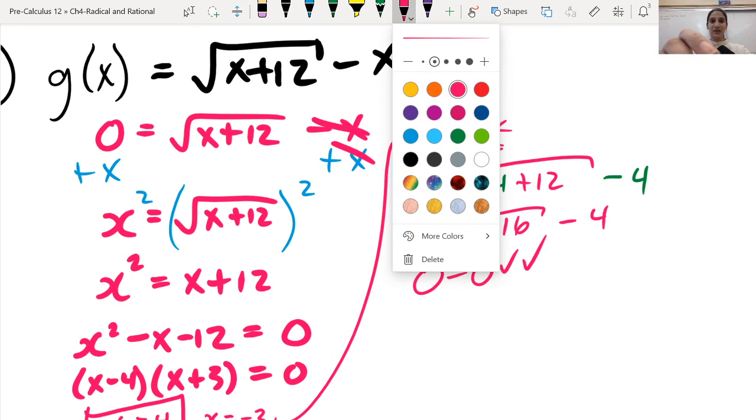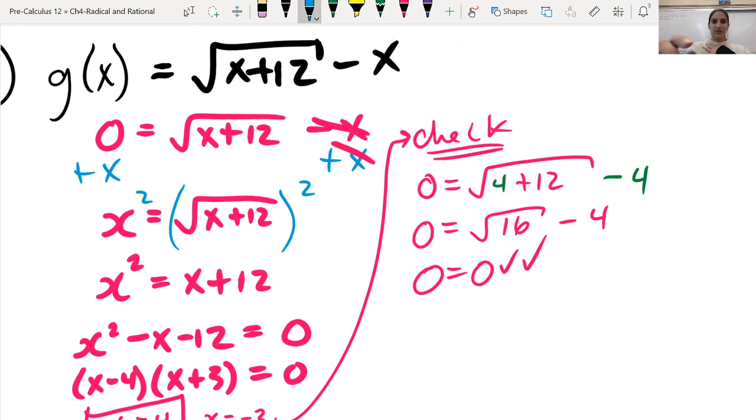I still need to check the other one, which is this minus 3. So let's do that here. 0. I'll go like that so you can tell the difference.